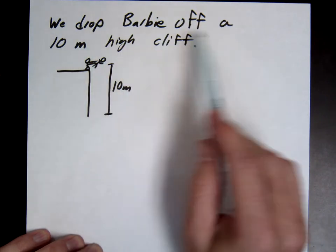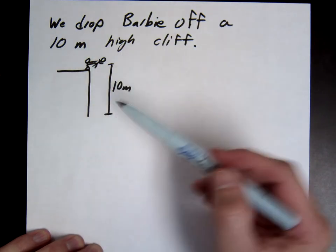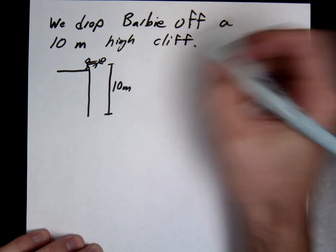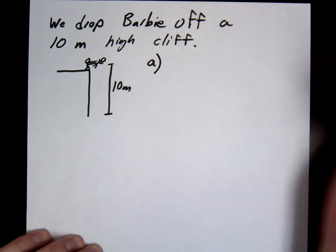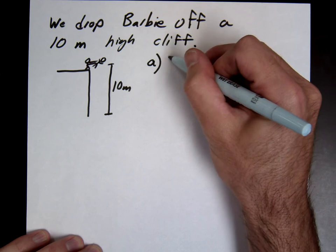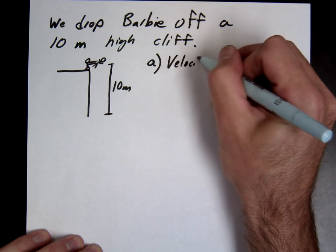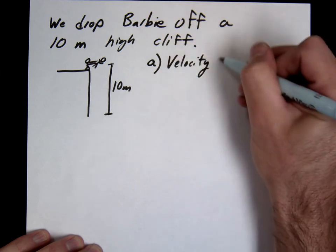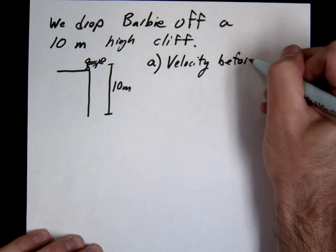Okay, so here's our problem. We're dropping Barbie off a cliff, 10 meter high. So here's the questions I would ask you. Letter A, for example, what is her velocity before hitting the ground?